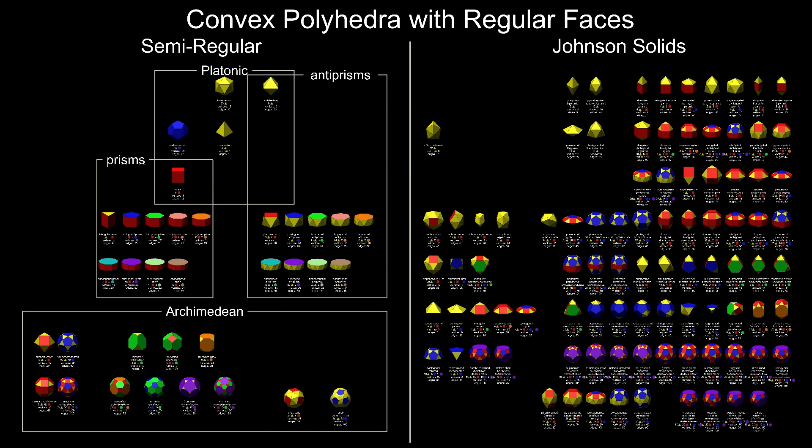The main division is between the semi-regular polyhedra, those with identical vertices, on the left, and the remainder, the Johnson solids, on the right.